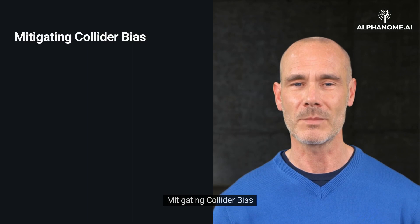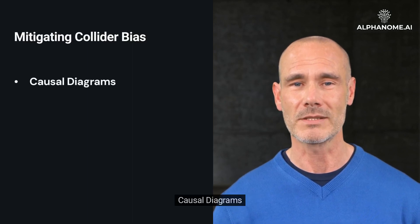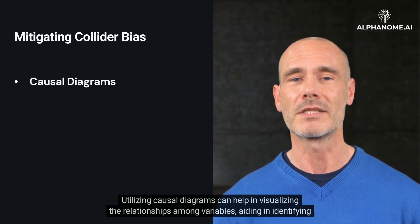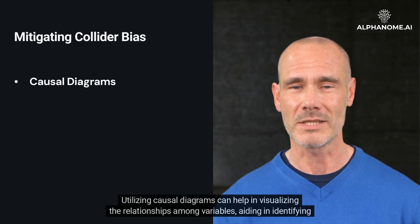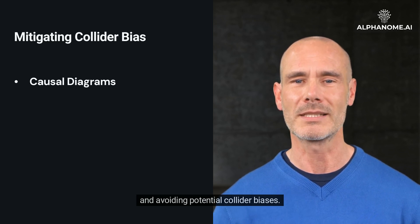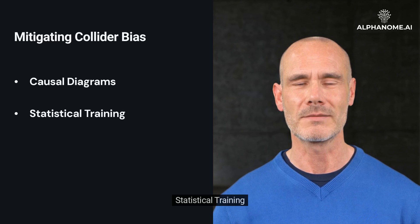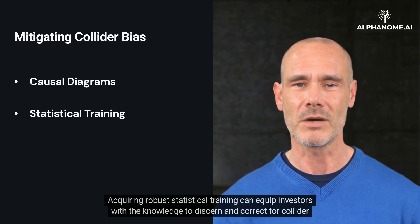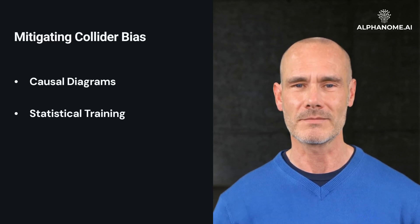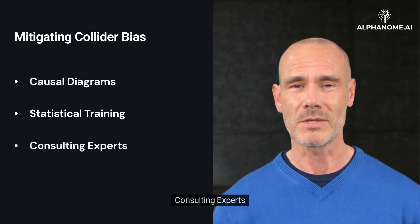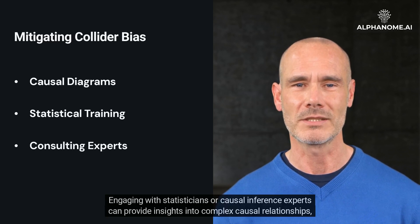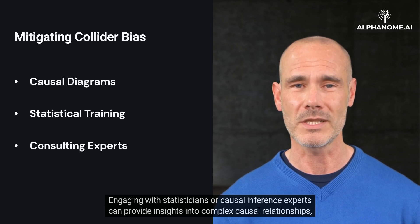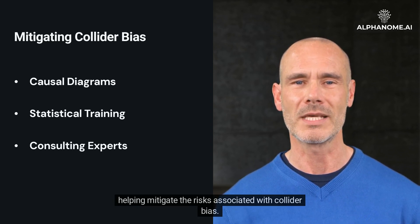Mitigating Collider Bias. Utilizing causal diagrams can help in visualizing the relationships among variables, aiding in identifying and avoiding potential collider biases. Acquiring robust statistical training can equip investors with the knowledge to discern and correct for collider bias. Engaging with statisticians or causal inference experts can provide insights into complex causal relationships, helping mitigate the associated risks.